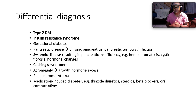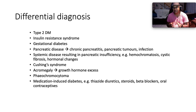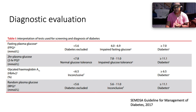The differential diagnosis for type 1 diabetes includes type 2 diabetes, insulin resistance syndrome, gestational diabetes, pancreatic disease such as chronic pancreatitis or pancreatic tumor, systemic diseases causing pancreatic insufficiency, hemochromatosis, cystic fibrosis, hormonal causes such as Cushing's syndrome, acromegaly, and phaeochromocytoma, and medication-induced diabetes from thiazides, steroids, beta blockers, and oral contraceptives.